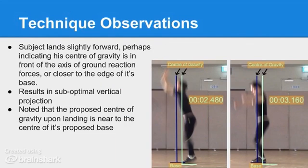The hypothesized take-off and landing centre of gravity is indicated in the snapshots. It is further evident that the subject travels forward during the flight phase of the jump. At take-off, the proposed centre of gravity is near the edge of the jumper's base, as well as being in front of the axis of ground reaction forces produced through the body's lever-like movements, in turn producing a torque which rotates the body as well as translational motion, resulting in sub-optimal vertical projection.